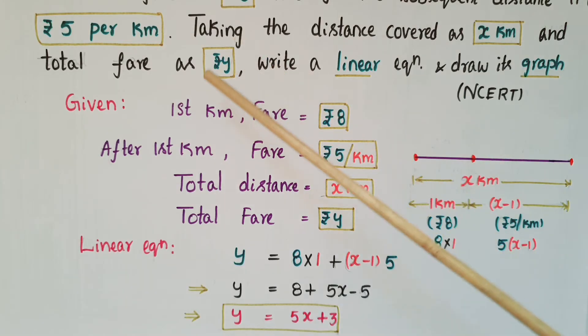So the total fare is y rupees, here it is given. So total fare y rupees is equal to 8 into 1 plus x minus 1 into 5. So y is equal to 8 plus 5x minus 5, that is y is equal to 5x plus 3. So this is the linear equation for this problem.